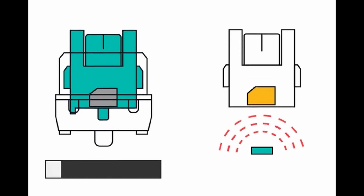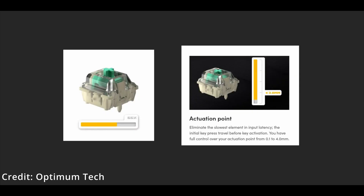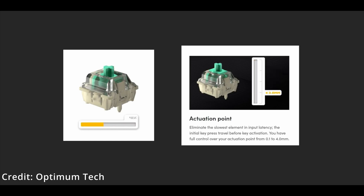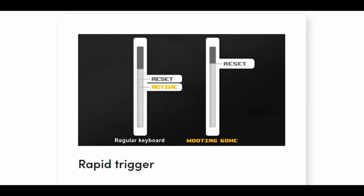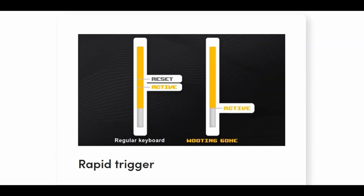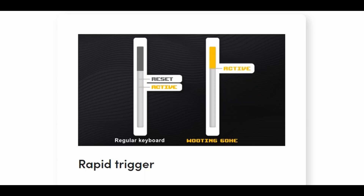This allows for features such as custom actuation points and rapid trigger. A customizable actuation point allows the user to dictate how far down the key switch should be pressed before input is detected, and can be customized for all keys with any actuation point between 0.1mm and 4mm. The rapid trigger feature detects any decrease in pressure on the key and will automatically stop the key press.